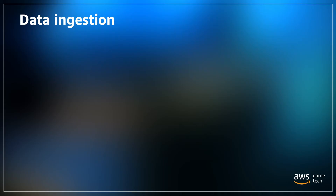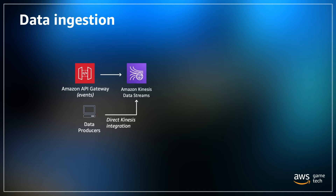Now that we know the different ways we can integrate AWS services with our game, let's do a deep dive on how data ingestion works. With the game analytics pipeline solution, you have the option to do data ingestion directly with the SDK or using the solution's REST API that comes prepackaged with the solution. Whatever you decide to use, data will be sent to your Amazon Kinesis data streams and ingested in real time.